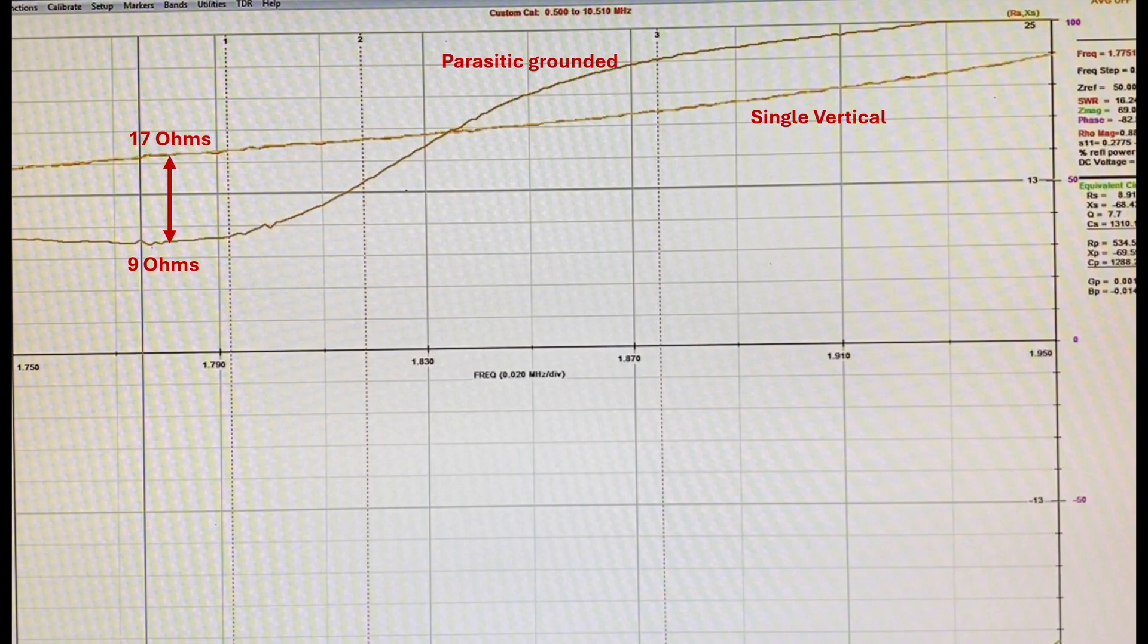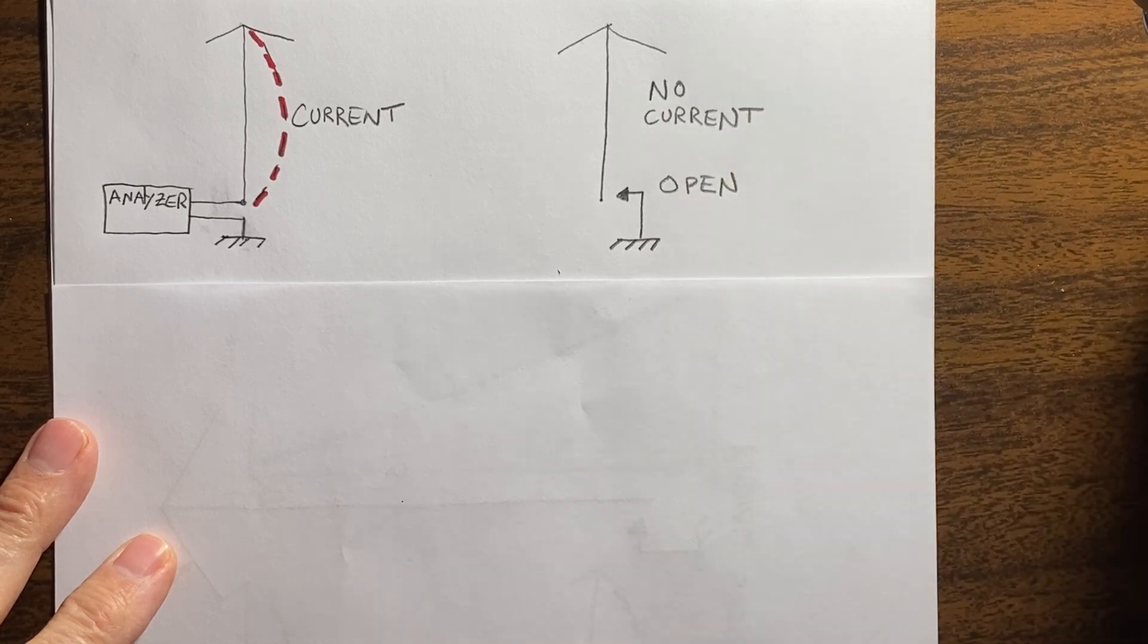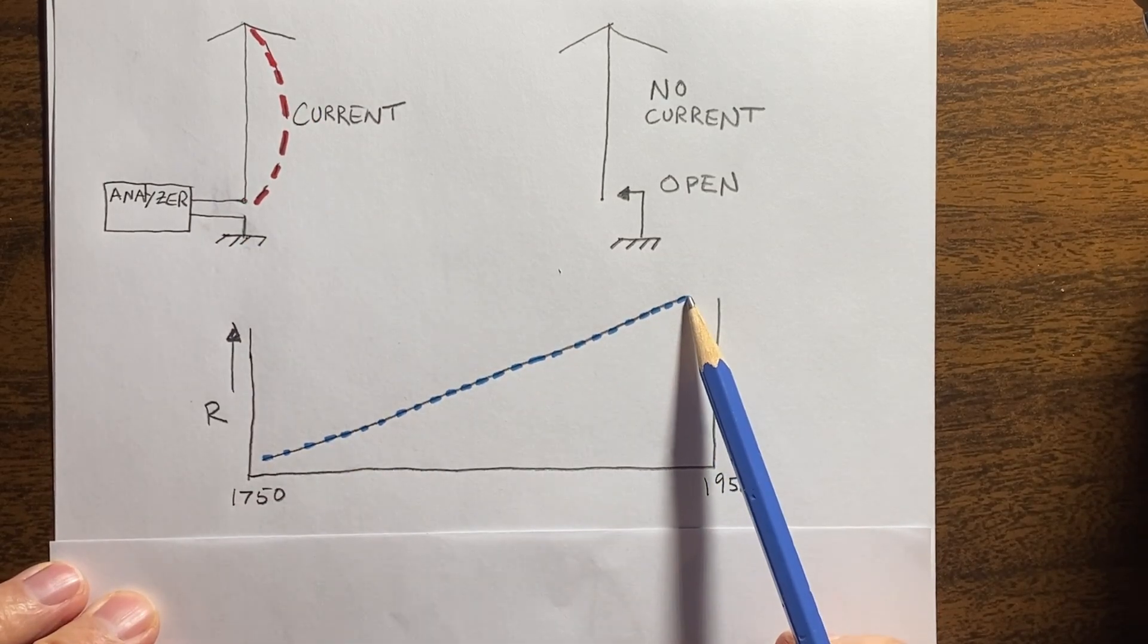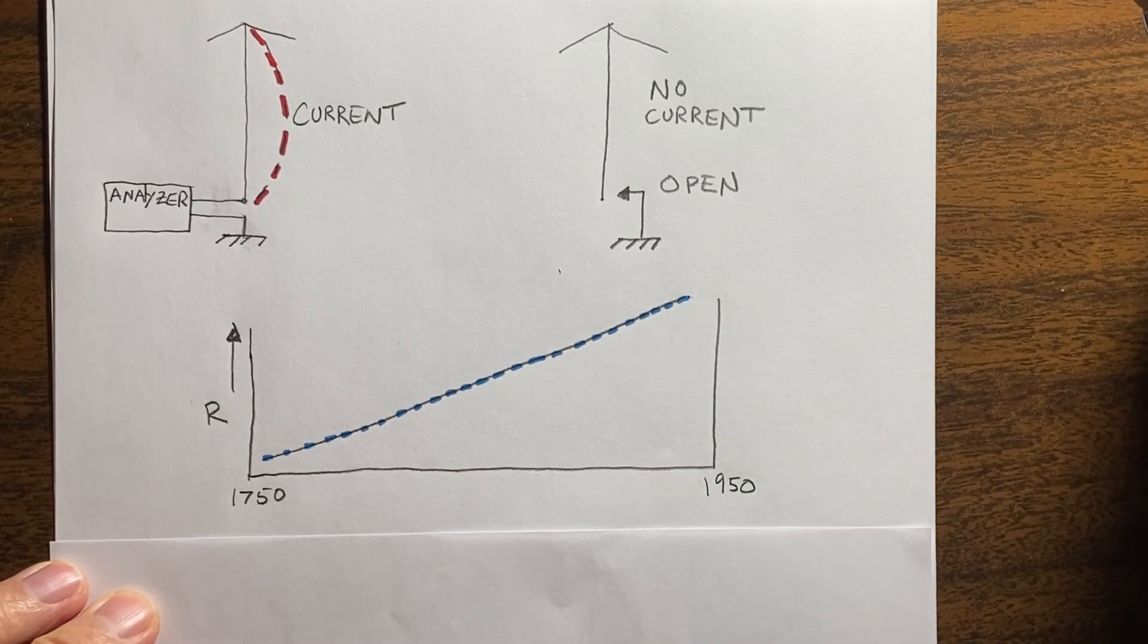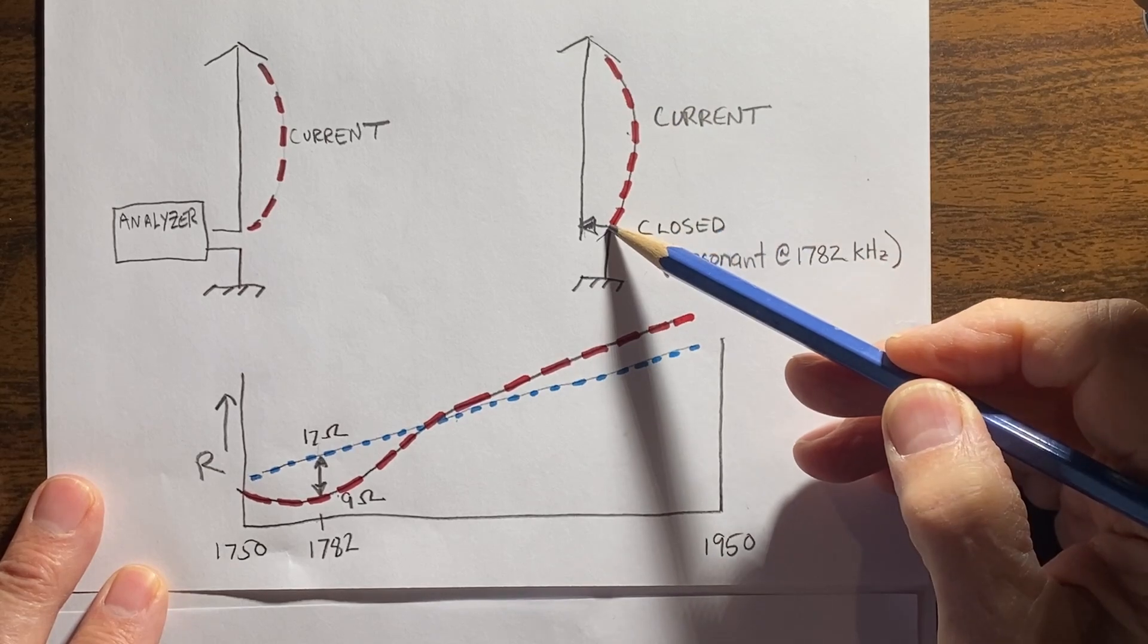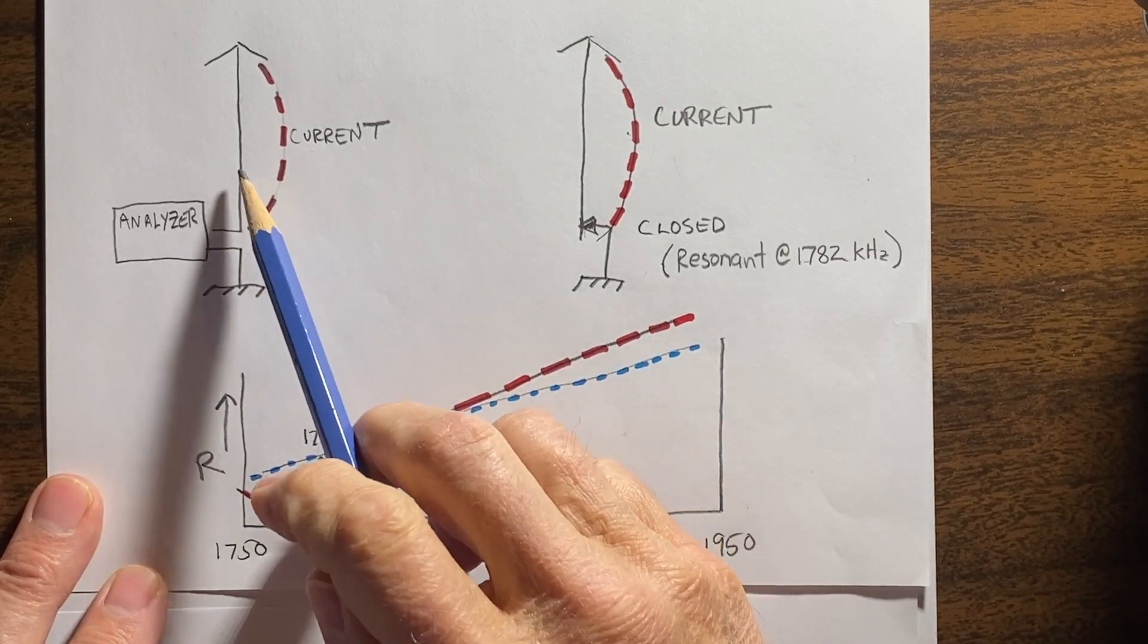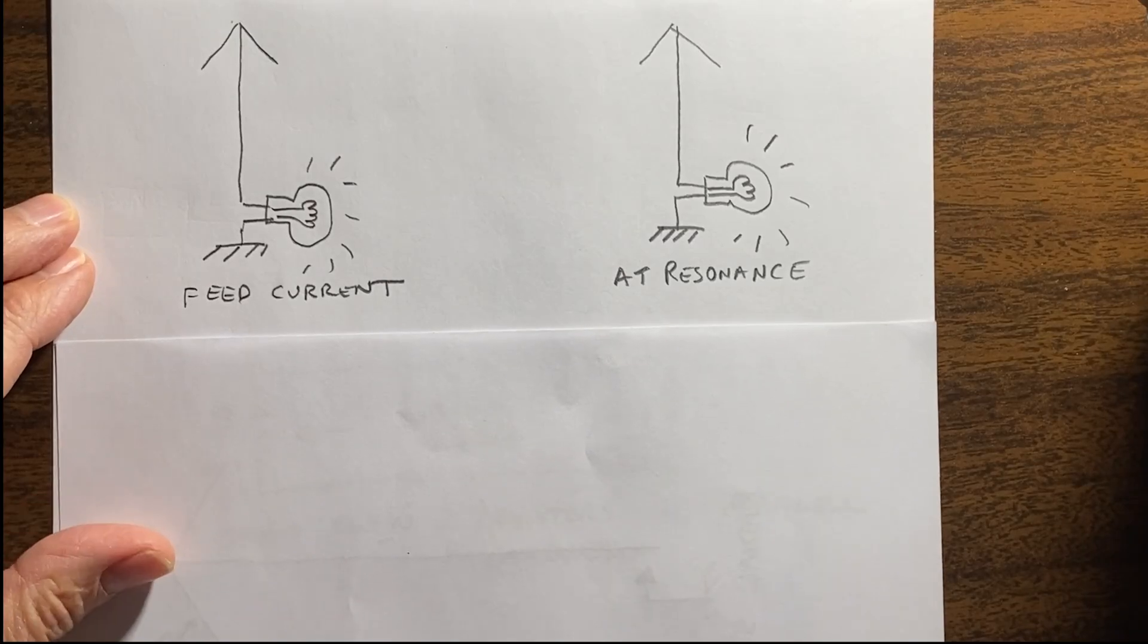Well, the reason the resistance has dropped is because we're now coupling current into that southeast element that we just grounded. That southeast element is resonant at 1780 kHz, and like a tuning fork, it starts to resonate and causes it to build current. This is mutual coupling. Since that element is now sharing the drive current to the system, the resistance drops.